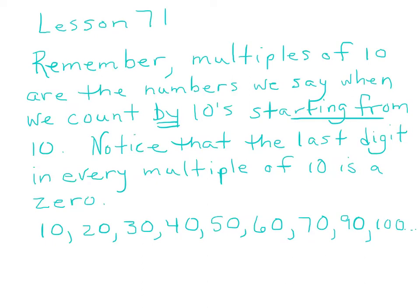Alright, in Lesson 71, remember multiples of 10 are the numbers we say when we count by tens starting from 10. Notice that the last digit in every multiple of 10 is a zero. Okay, 10, 20, 30, 40, 50, 60, 70. Whoops, someone, and I won't say who, forgot 80, 90, 100.